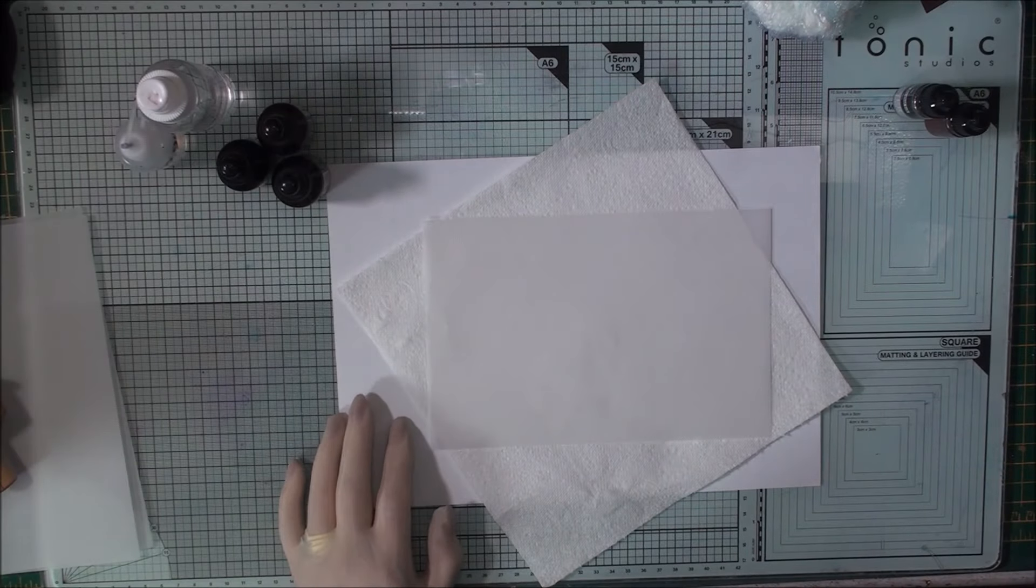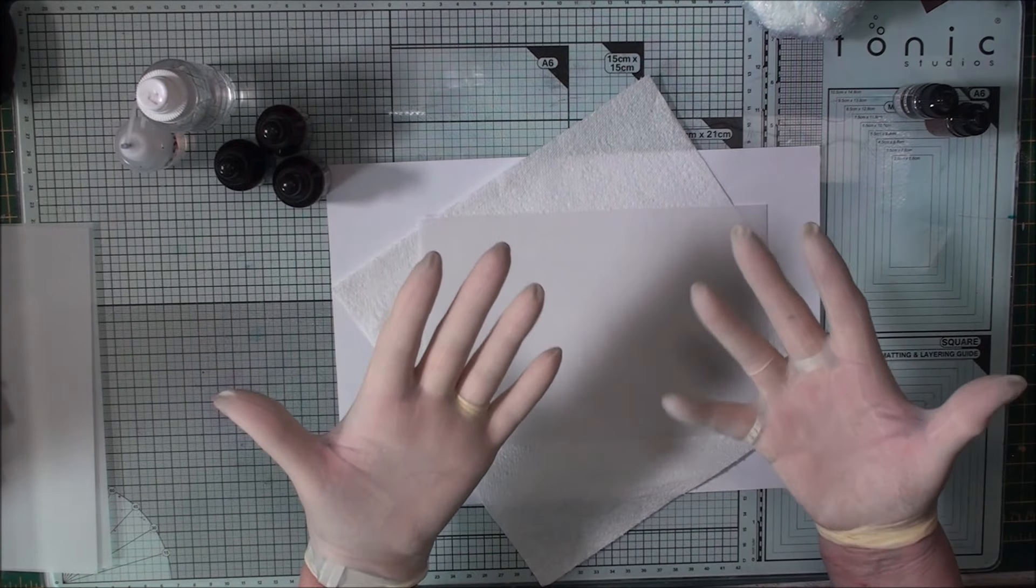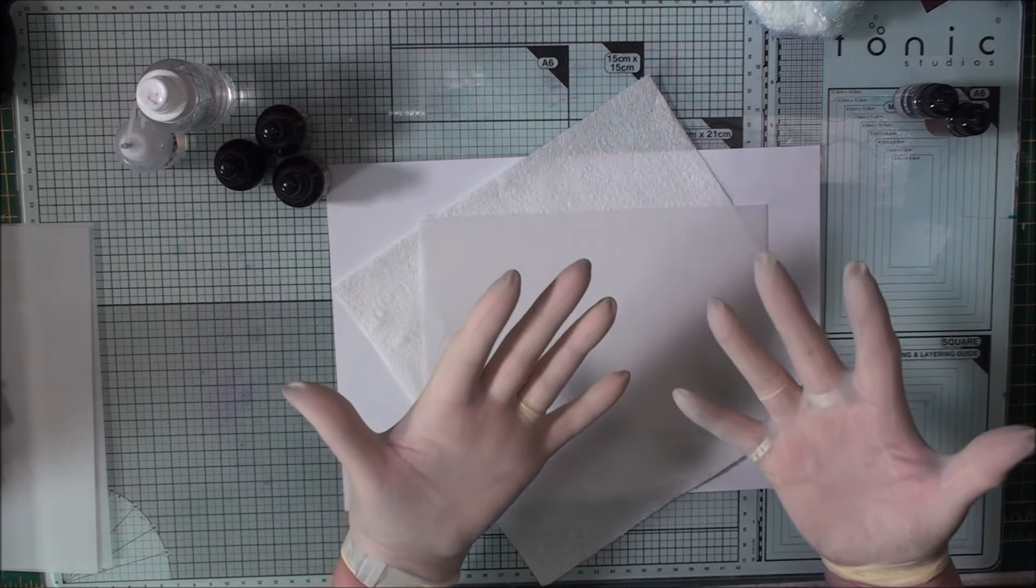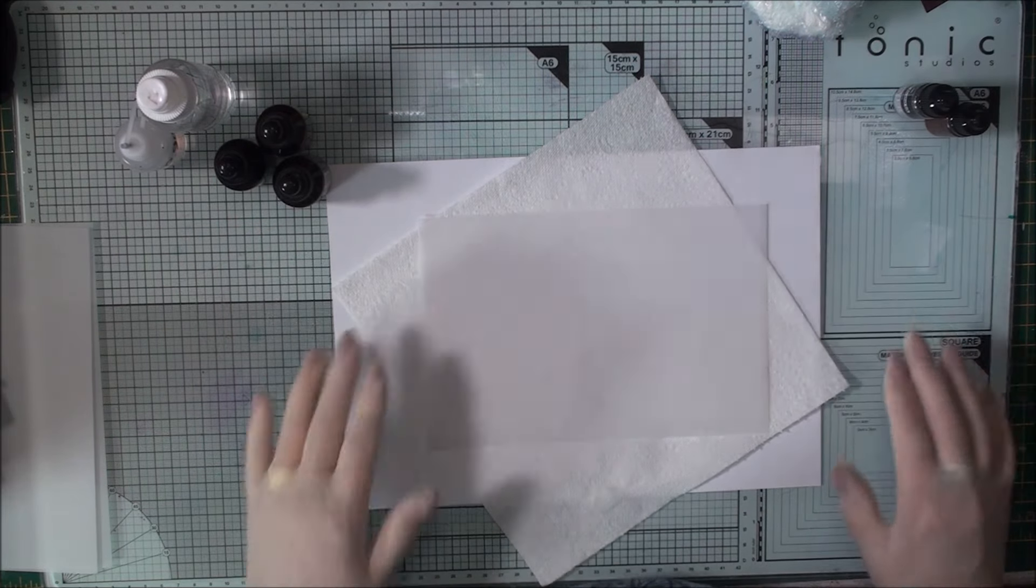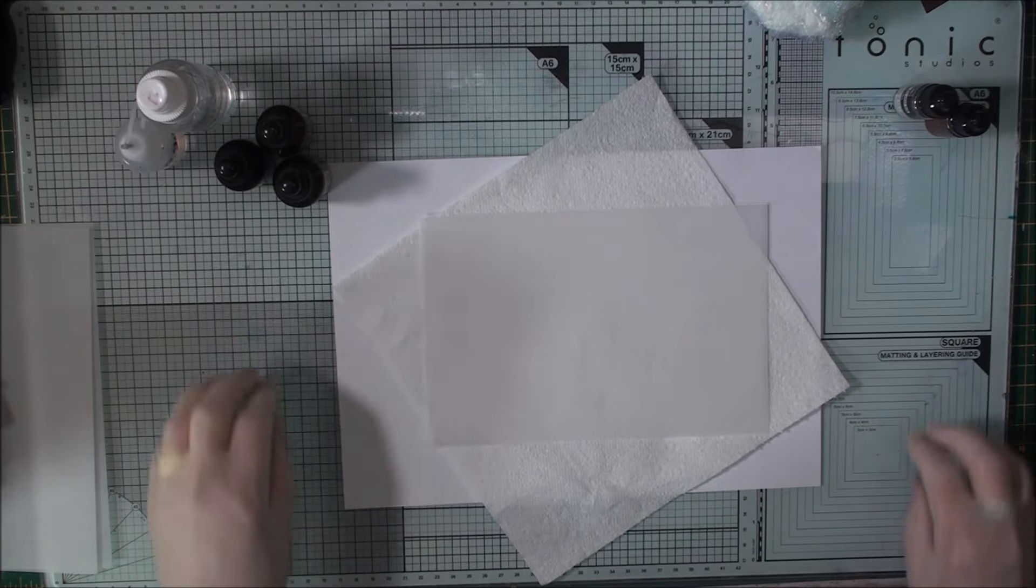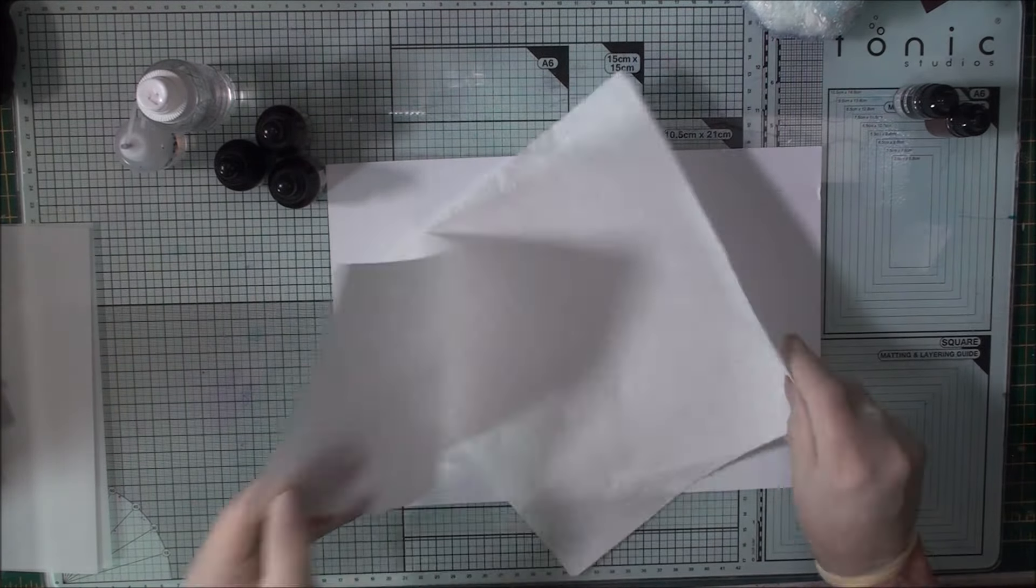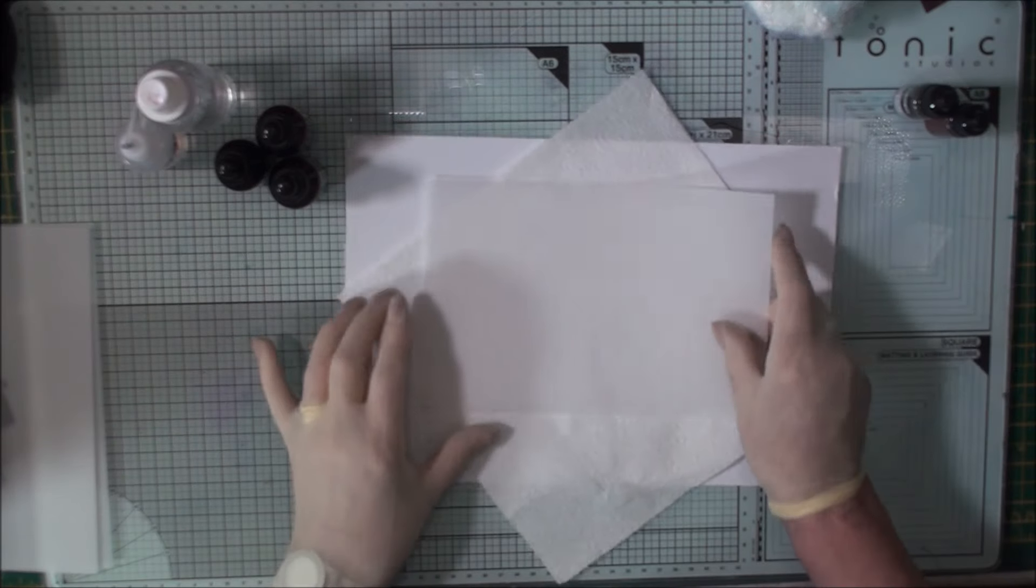So before we start let's have some safety precautions. Wear rubber gloves otherwise your hands will end up covered in the alcohol ink. Make sure you work on a really sturdy surface. This is a glass mat. I've put paper and some kitchen roll down and there's my piece of parchment.